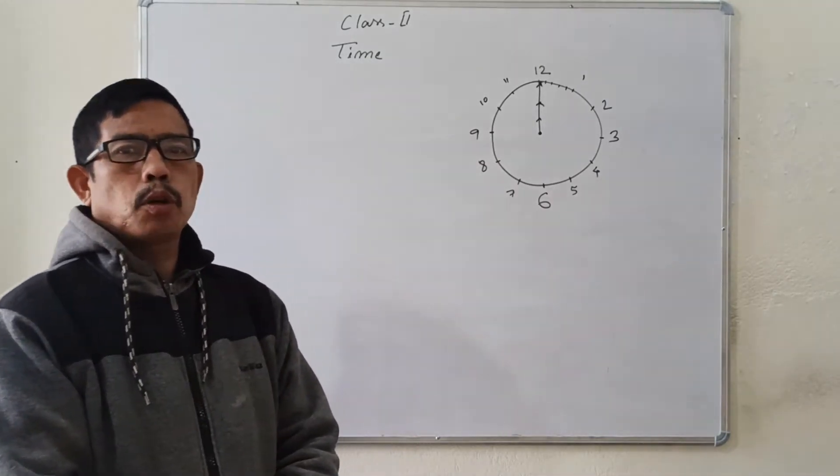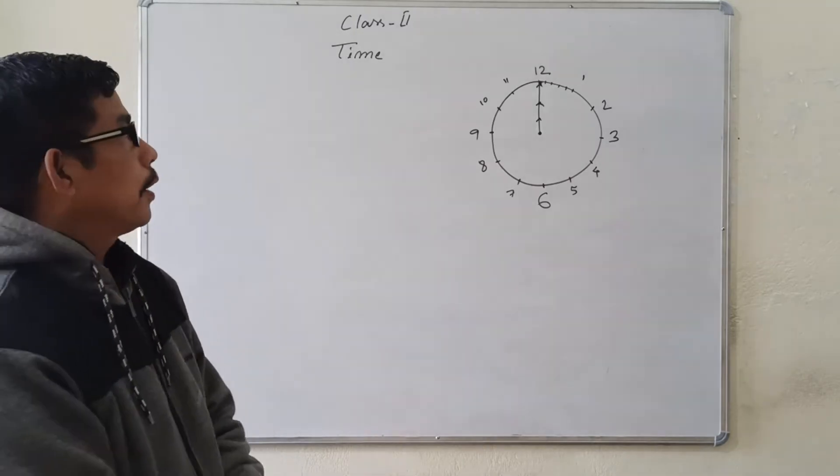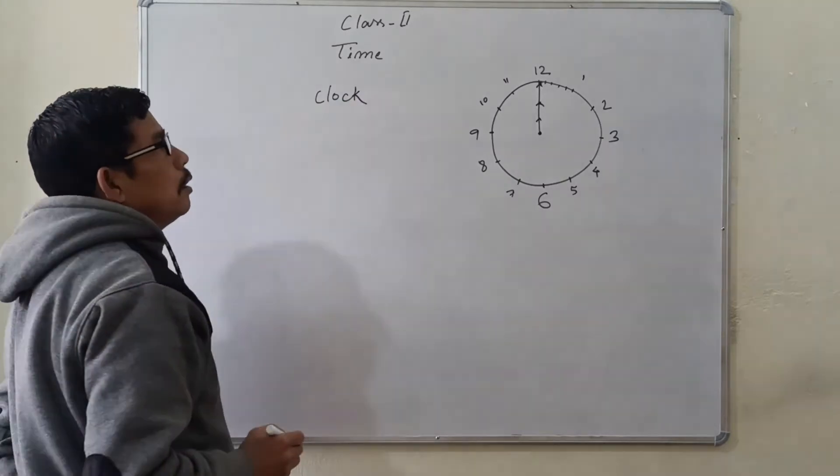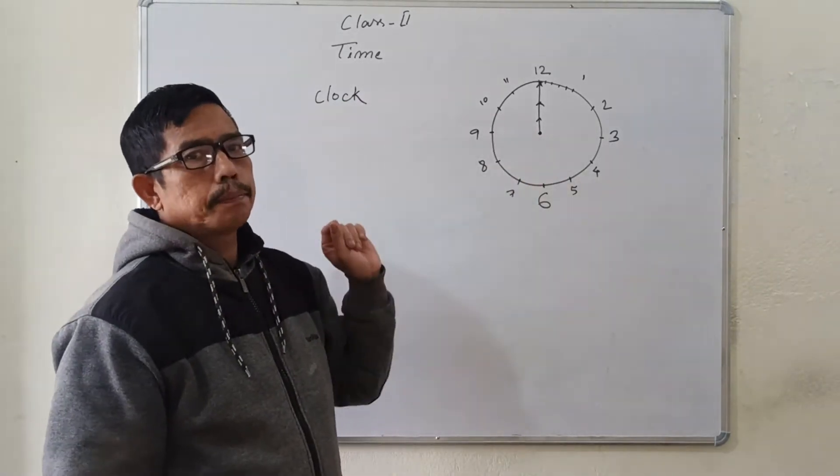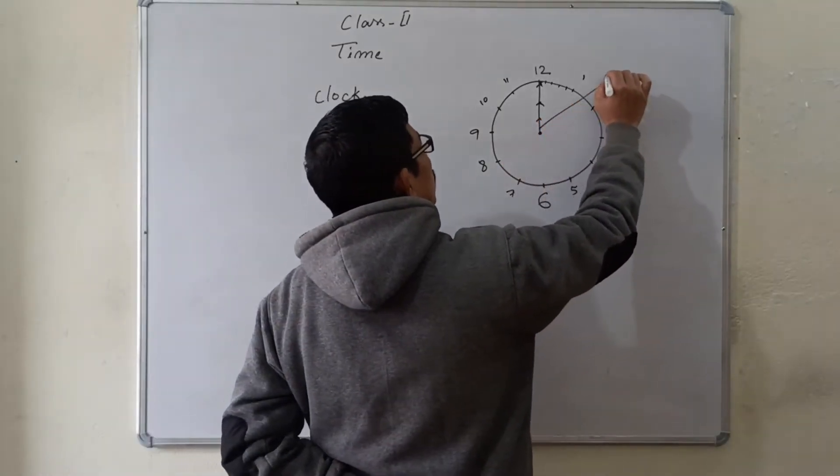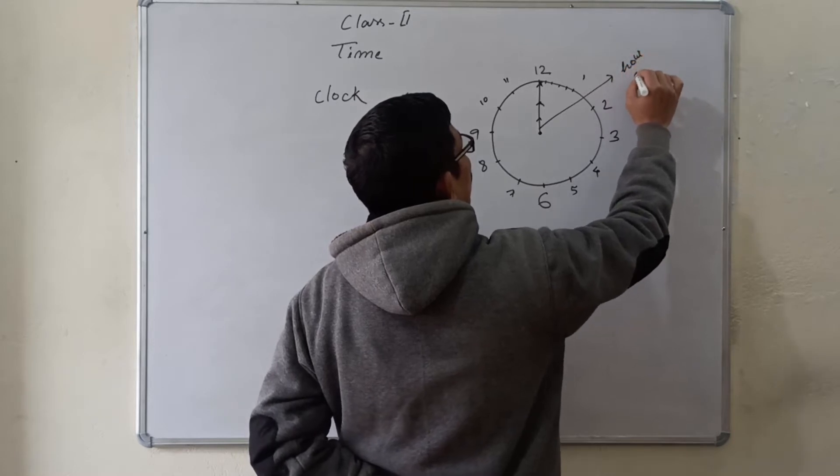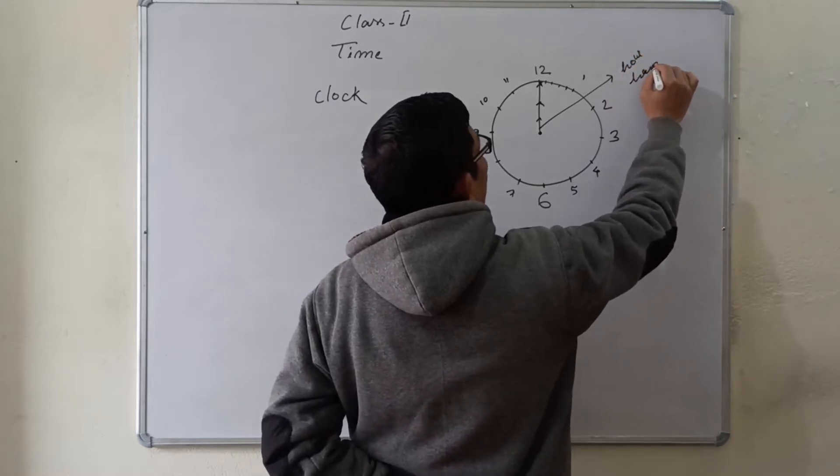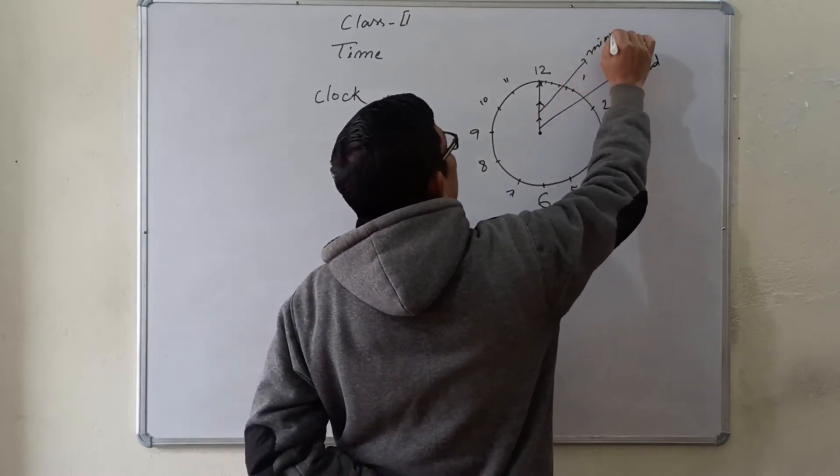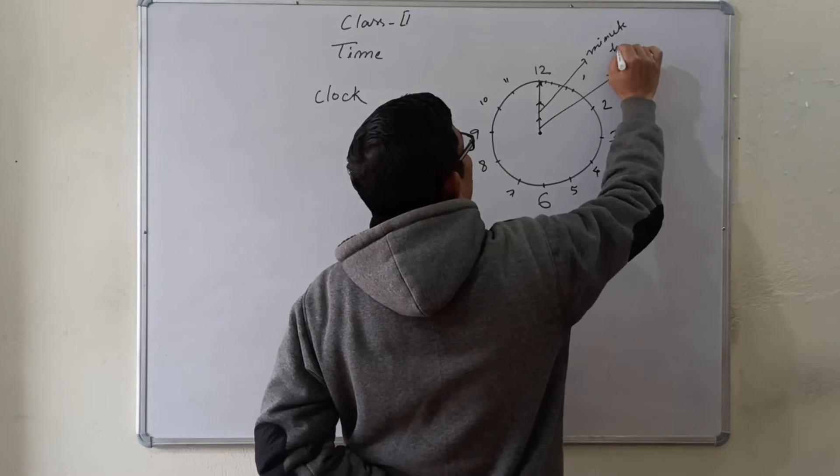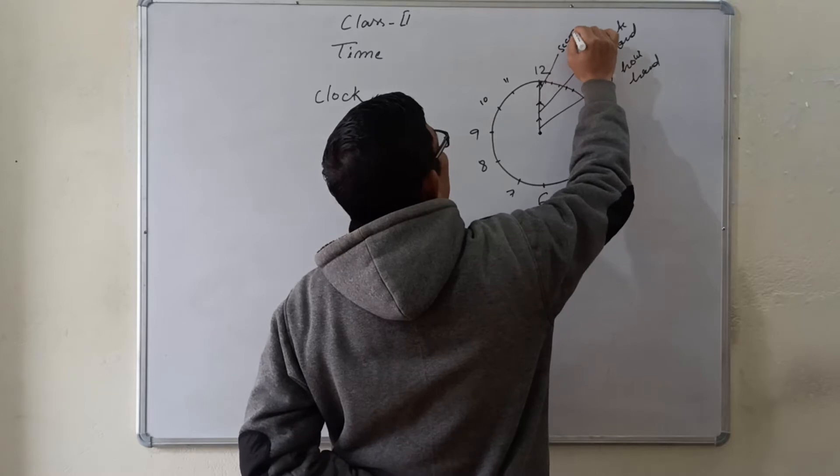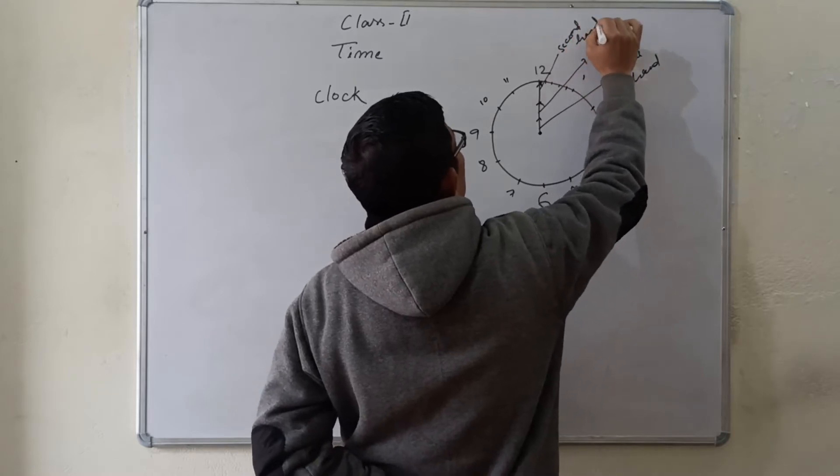Here we shall discuss some topics related with time. First, we shall discuss about clock. A clock has three hands. The shortest one is known as the hour hand. The longer one is known as the minute hand. And the longest one is the second hand.